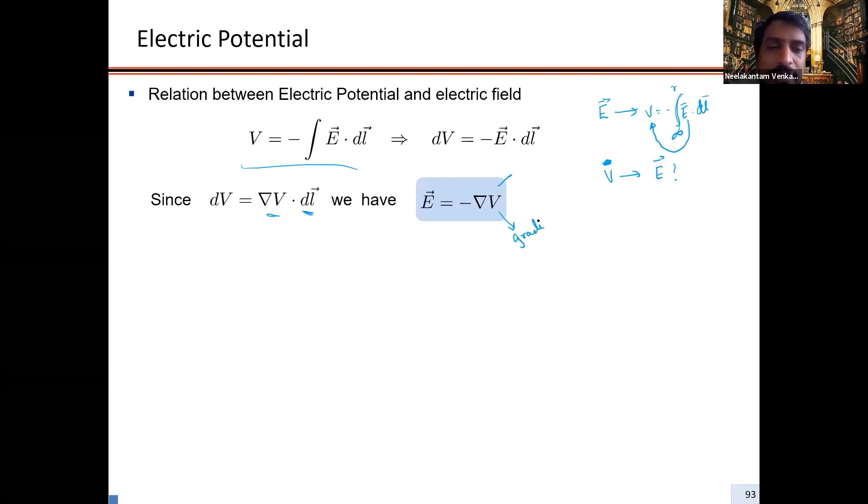So gradient of V. What is gradient of V? That's dV over dx in the x hat direction, plus dV over dy in the y hat direction, plus dV over dz in the z hat direction. The whole thing with a negative in the front.